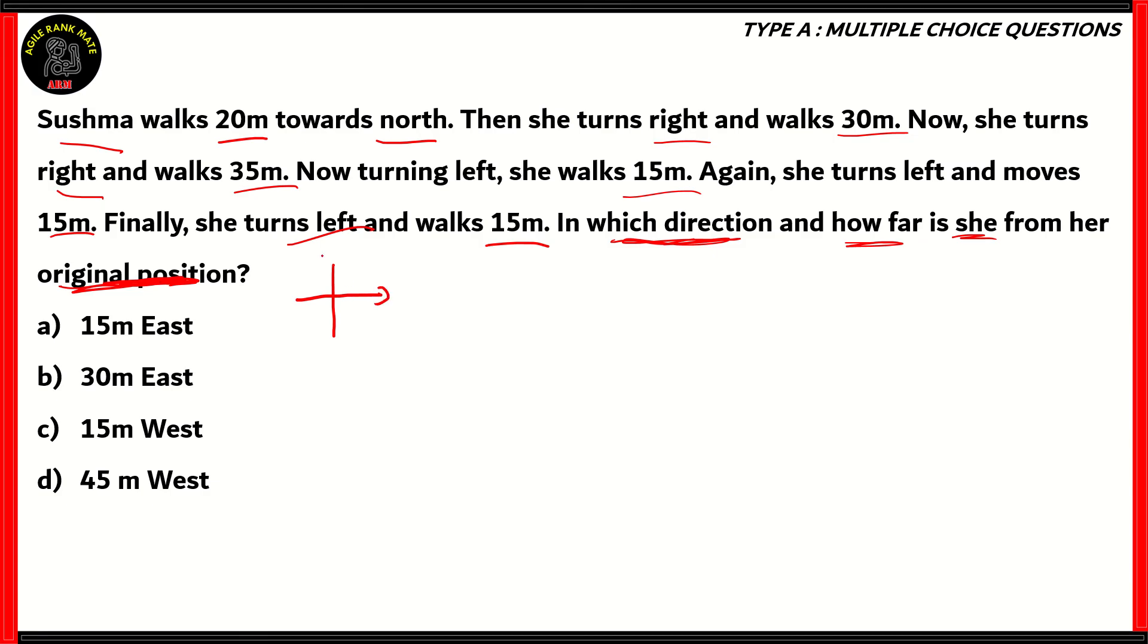So, before moving on, we will draw the cardinal directions first for direction tests. North, south, west, and east. Now, let's consider the initial position as A. Now, from here, the person walked 20 meters towards north. So, let's take this position as B, and the distance between A and B to be 20 meters. Now, at B, she turns right and walks 30 meters. So, her new position is now C, and the distance she traveled between B and C is 30 meters. She turns right again and walks 35 meters. So, now she reaches a point D, which is 35 meters away from C.